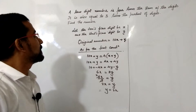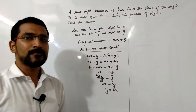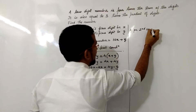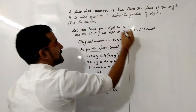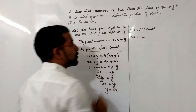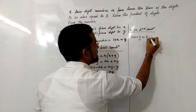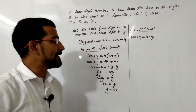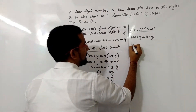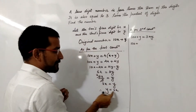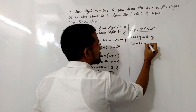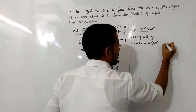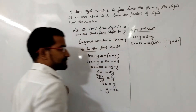The second condition is: the two-digit number is also equal to 3 times the product of its digits. So: 10x + y = 3 × x × y. Now substituting y = 2x, the equation becomes 10x + 2x = 3 × x × 2x, that is 12x = 6x².